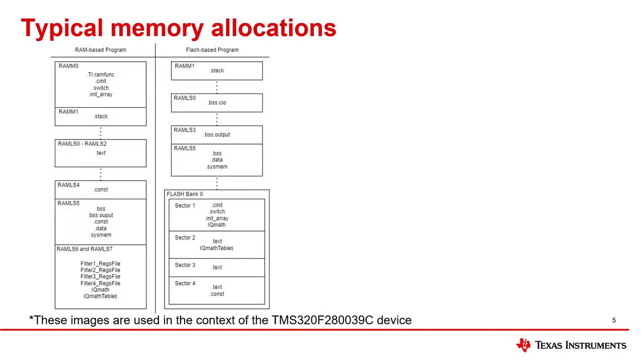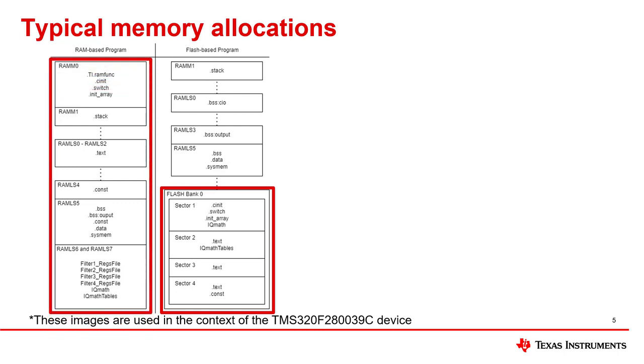The first image shows the allocation of data on RAM compared to flash. This diagram is based on the F280039C device. As you can see for flash, the tables and code are stored in various sectors of a single bank, whereas RAM needs to store the items over multiple RAM units.